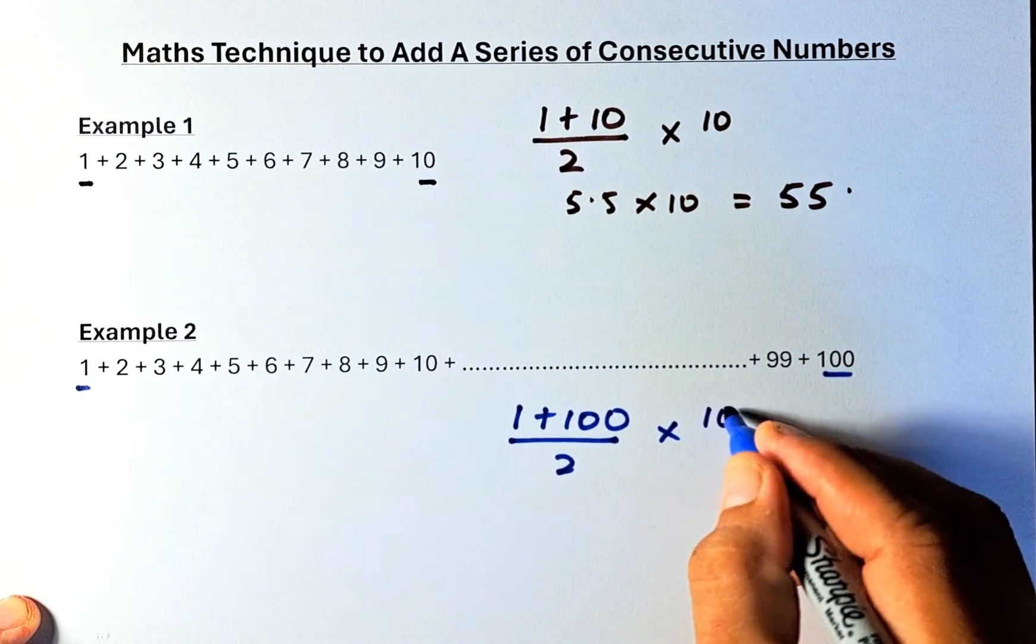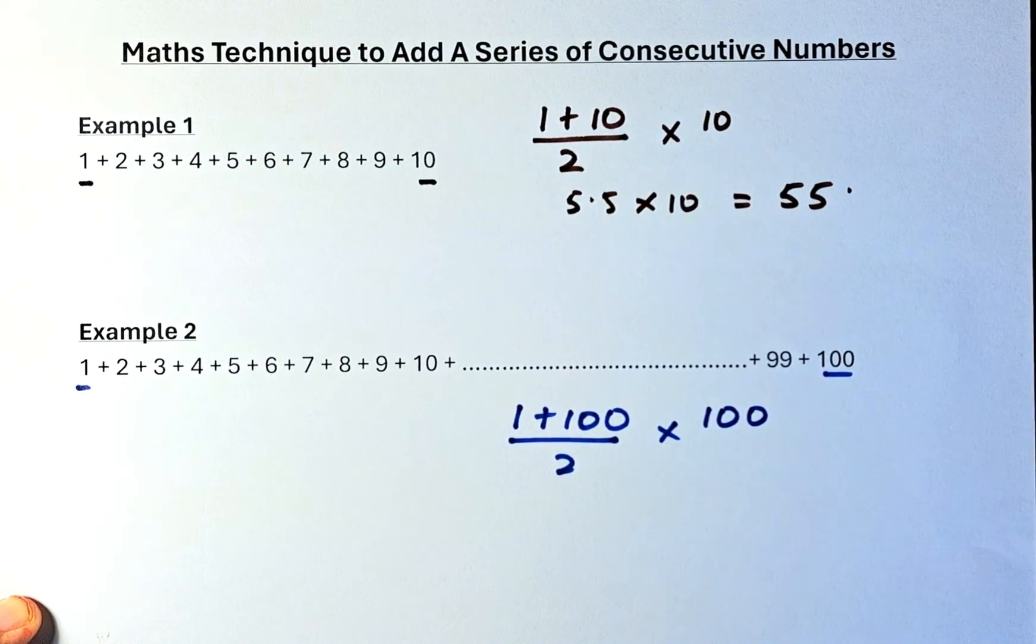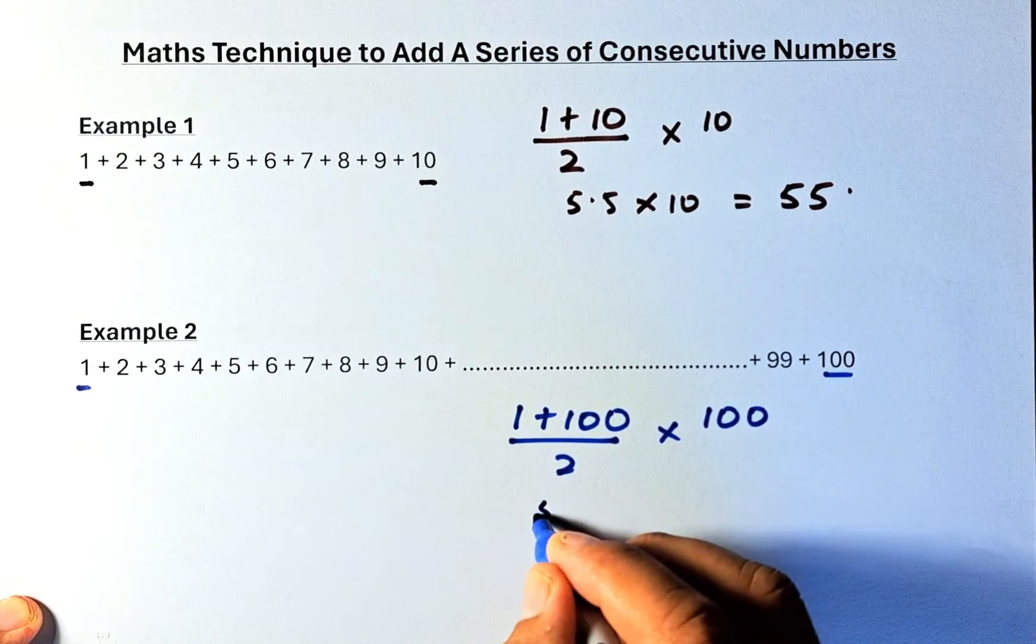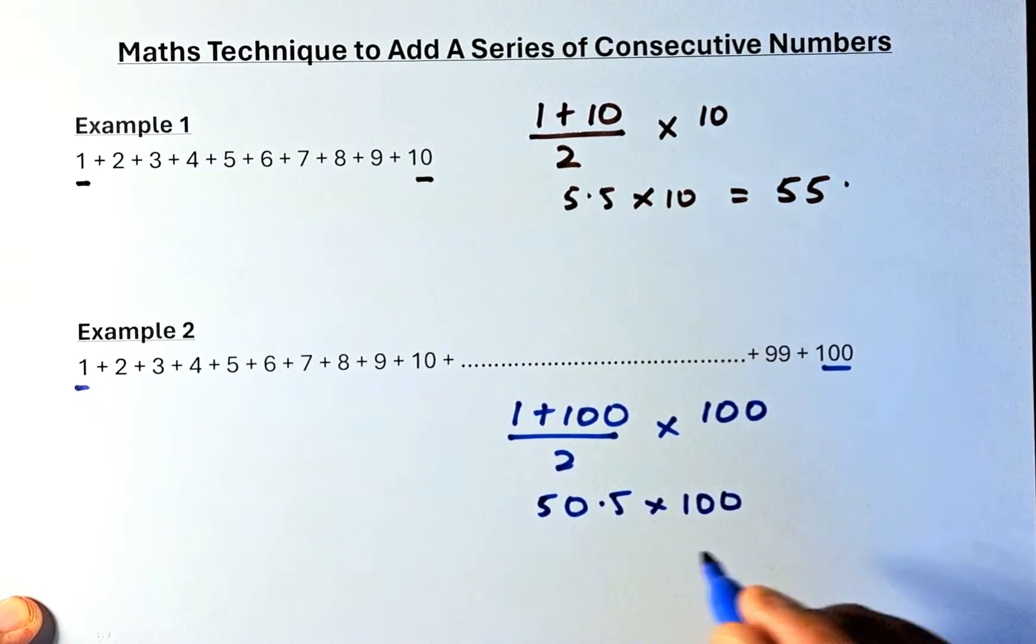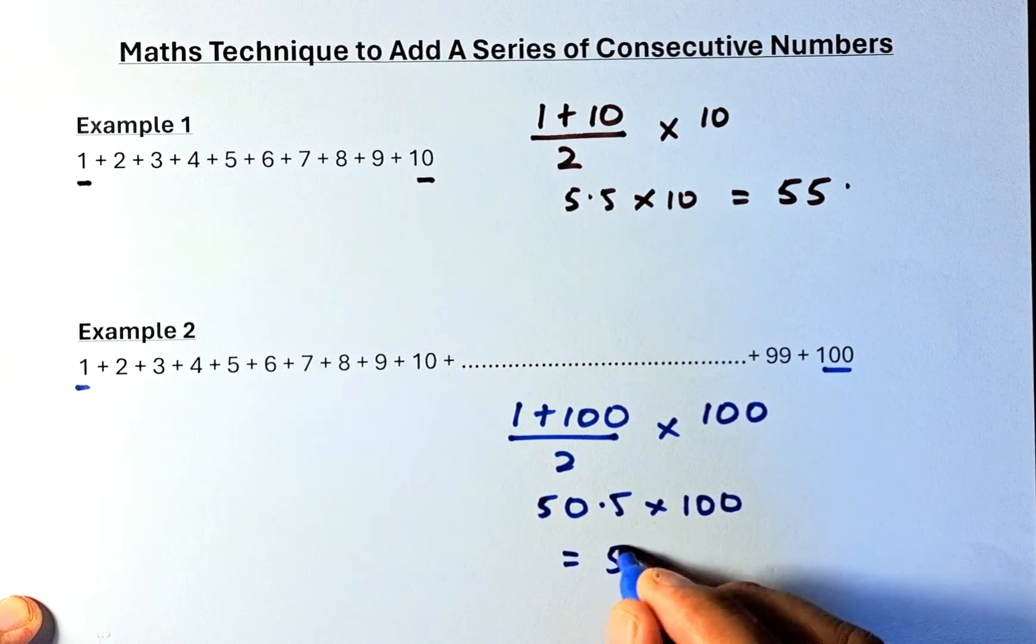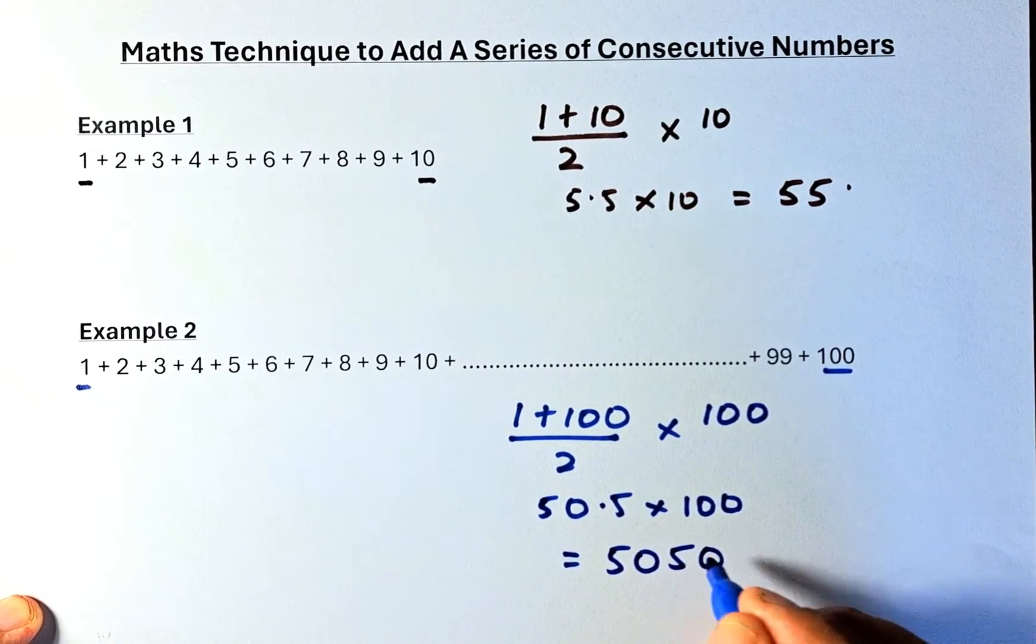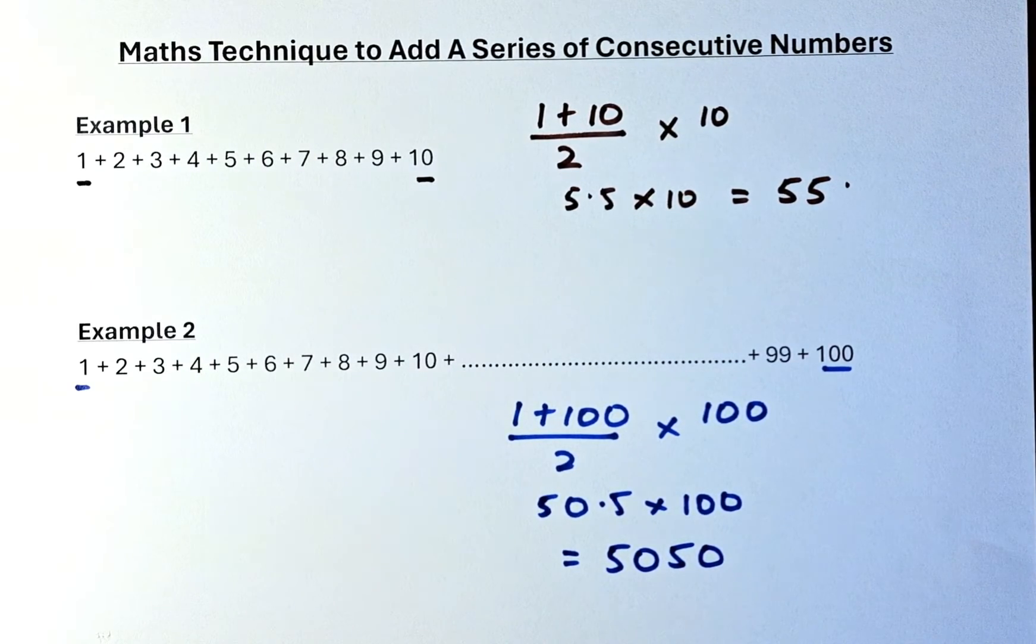so you multiply by 100. So 1 plus 100 is 101 and you divide by 2, it's going to be 50.5, multiply by 100 and the sum quickly is going to be 5050. So in other words, you do not need to use your calculator.